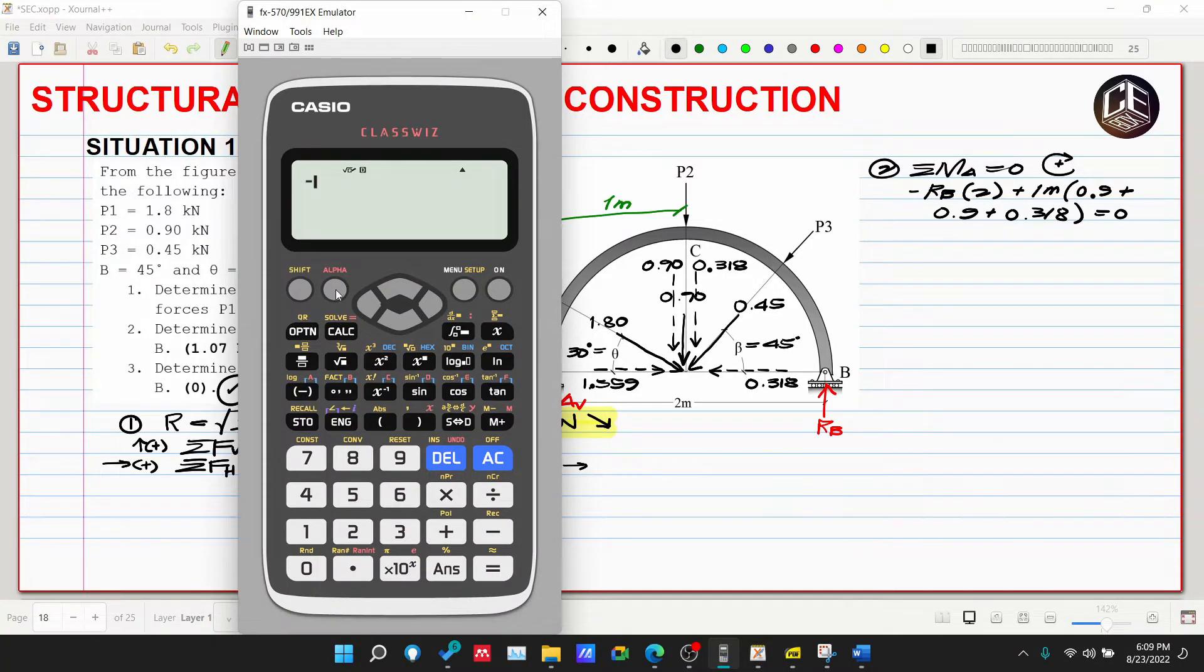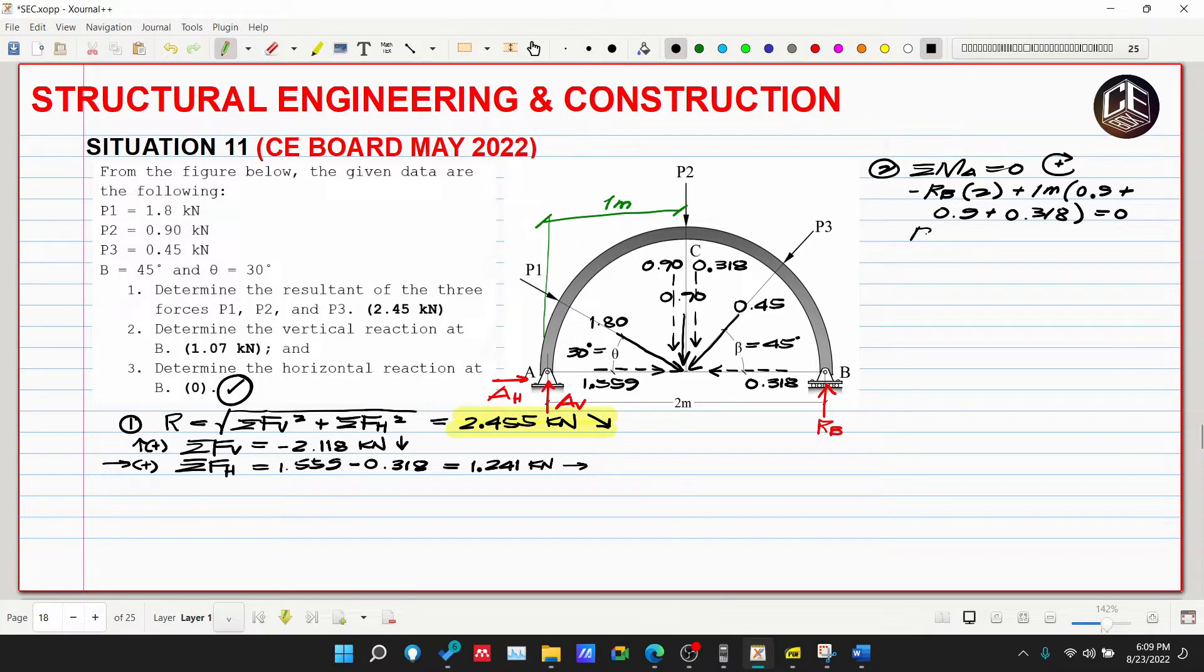Negative RB multiplied by 2 plus 1 multiplied by 0.9 plus 0.9 plus 0.318 equivalent to 0. Kung nakuha natin, sagot is 1.059. Ating RB is equivalent to positive 1.059. Pag ni-round off natin to 1.06 which is malapit sa 1.07, so matter of rounding off the numbers na lang to or answers. Since positive ang ating RB, therefore ang ating assumed direction for RB is tama, so ito ay directed upward.